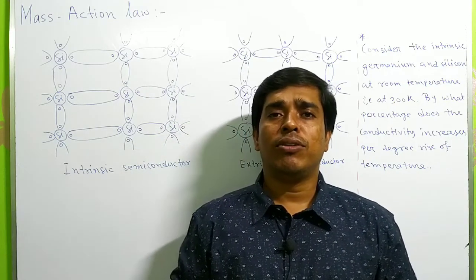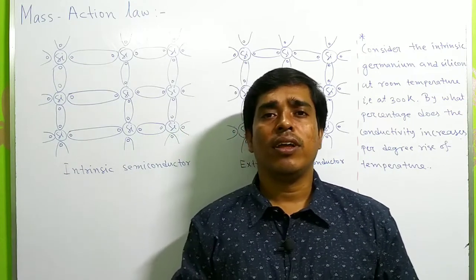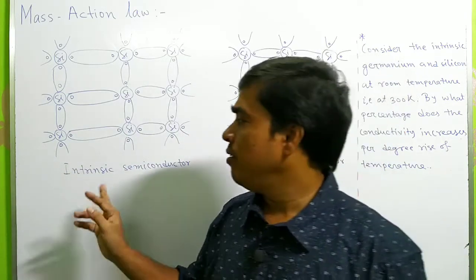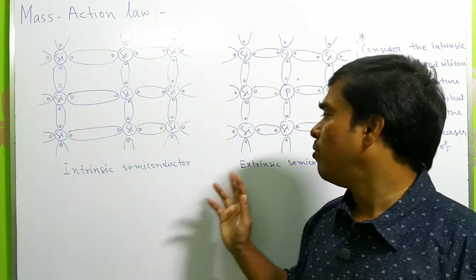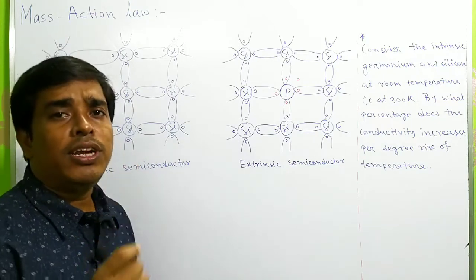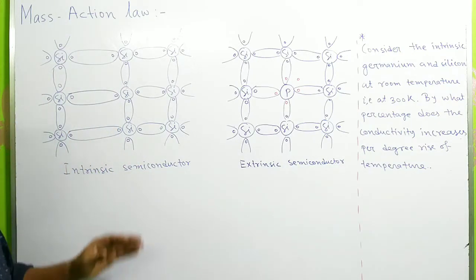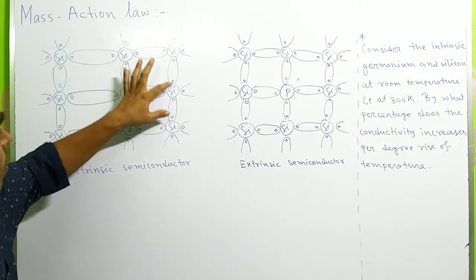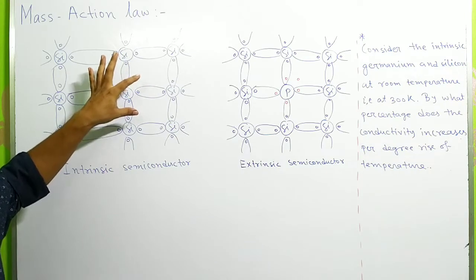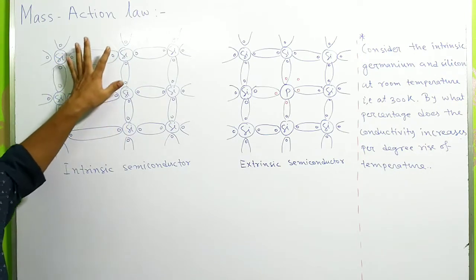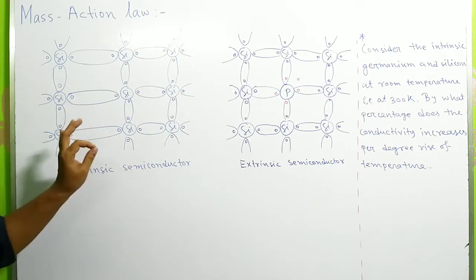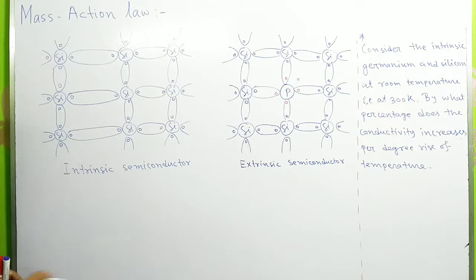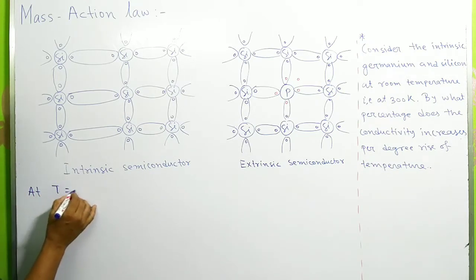Today we will discuss the mass action law. To understand it, we need to know about the crystal structure of intrinsic and extrinsic semiconductors. Pure silicon or pure germanium have four valence electrons, so they create four covalent bonds with their neighboring silicon atoms, forming a crystal structure. Germanium atoms also create the same crystal structure.